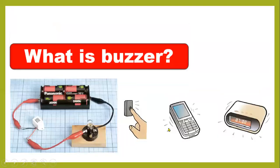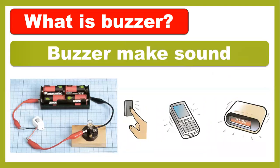A buzzer makes things sound. For example, a doorbell — when you press the button, the buzzer makes a sound. Also, when someone calls you, the phone will ring and make a sound. And there is an alarm clock that helps wake you up in the morning. These things that make sound we call buzzers.